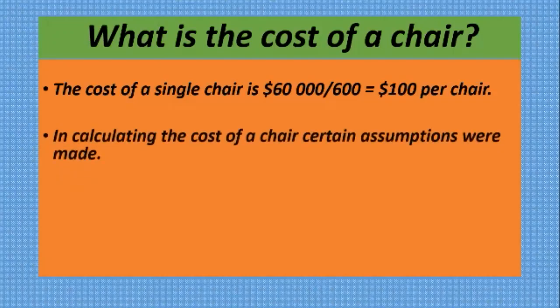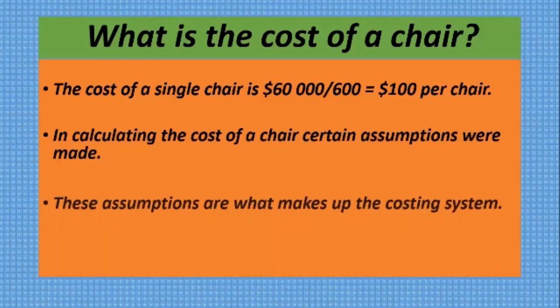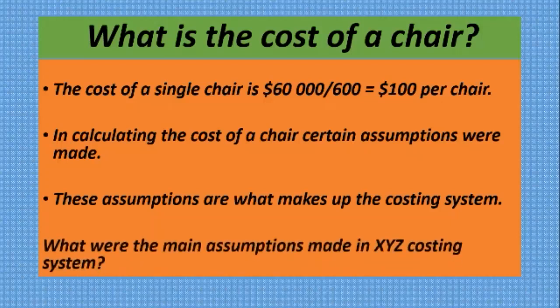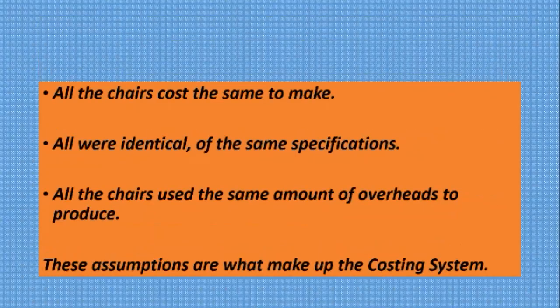In calculating the cost of a chair, certain assumptions were made, and these assumptions are what make up the costing system. What were the main assumptions made in XYZ's costing system? The first assumption is that all the chairs cost the same to make — that is why we divide the total cost by the number of chairs produced. In practice, that may not necessarily be so.